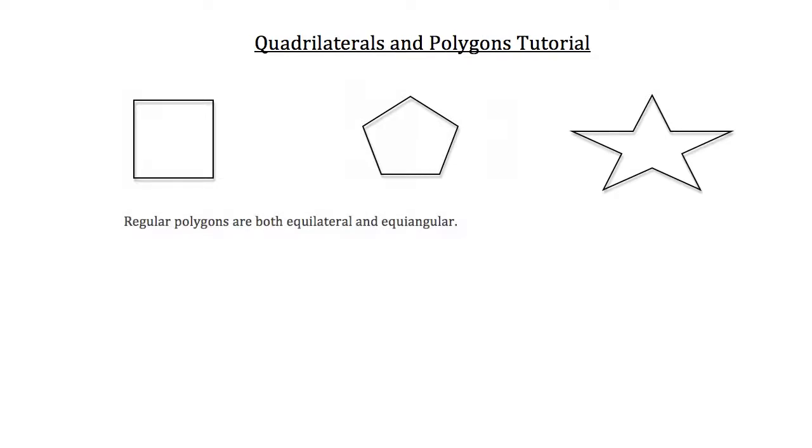Now polygons can be classified in a couple different ways. The first classification we're going to discuss is regular polygons. Regular polygons are both equilateral and equiangular, meaning that they have equal side lengths and all the angles interior on the polygon are equal.